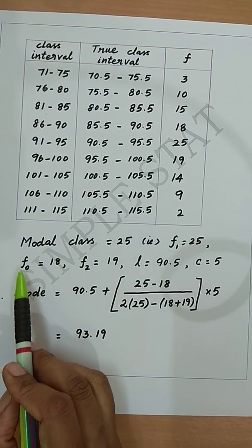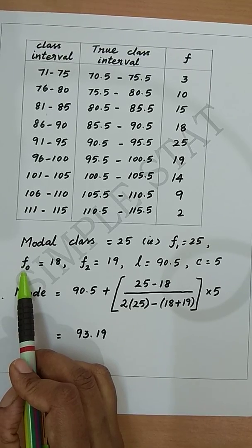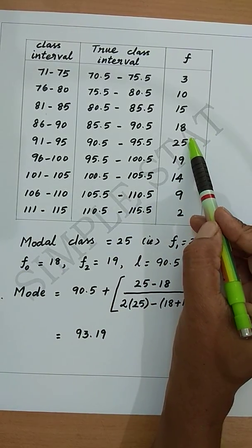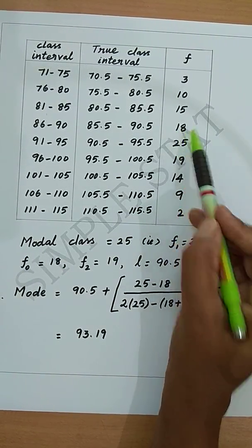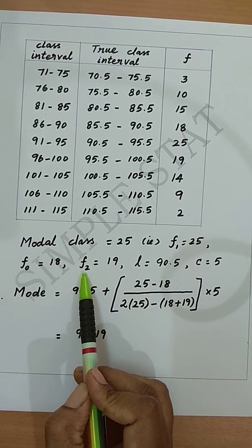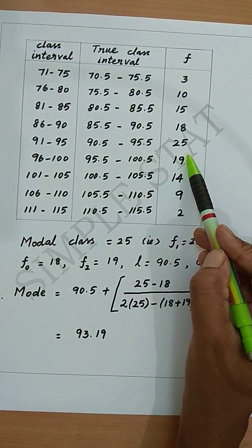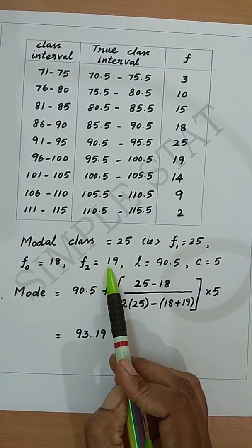Now get F0 which is frequency of the pre-modal class. The frequency of the pre-modal class is 18. And get F2 which is frequency of the post-modal class, and here we have 19.